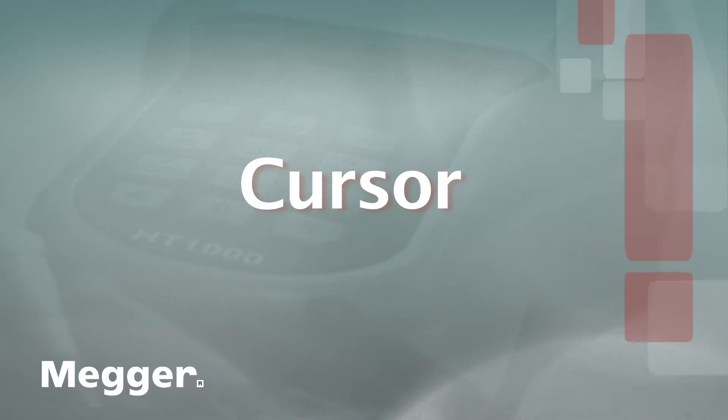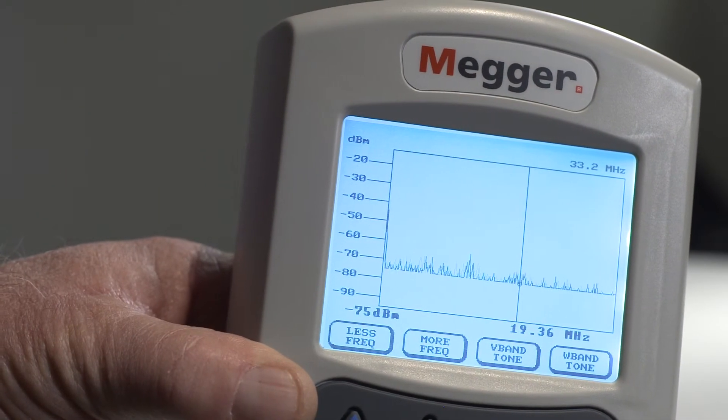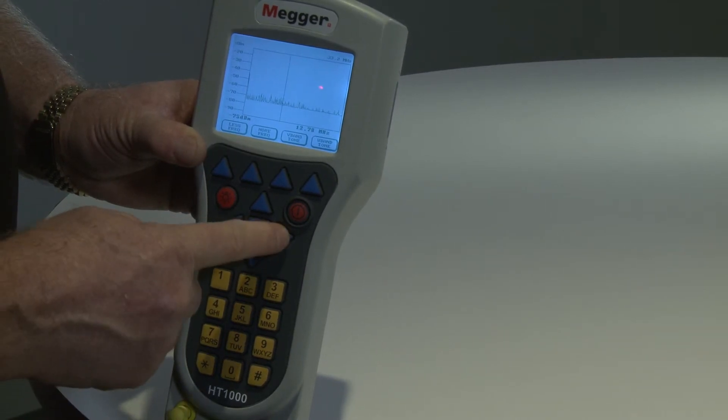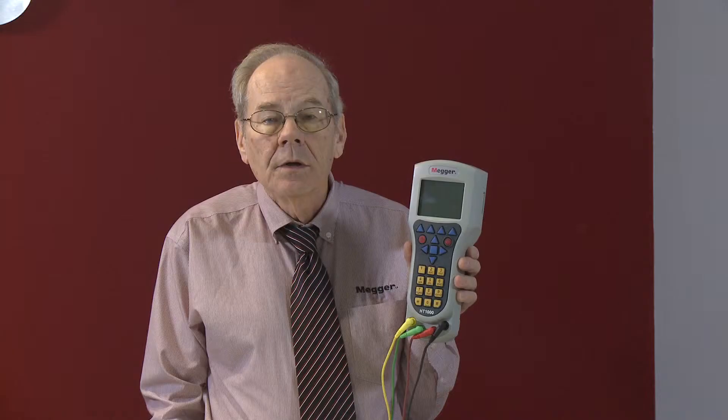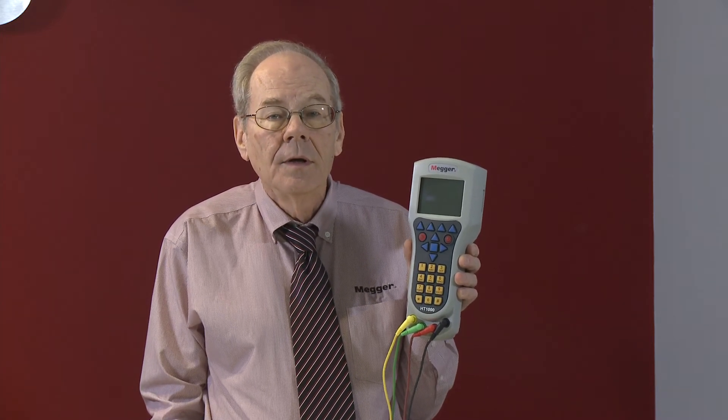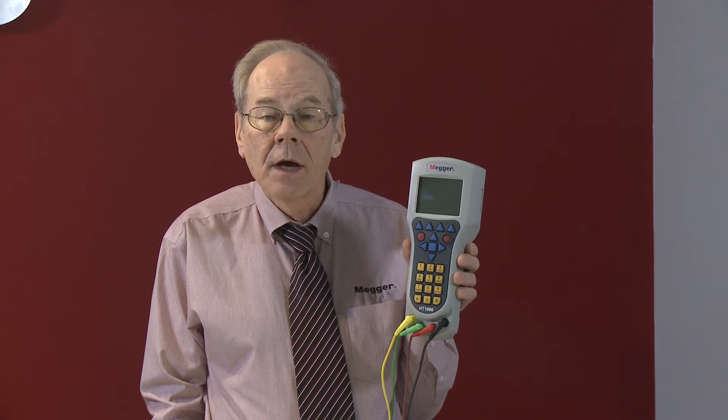Cursor. The vertical line on the spectrum display can be moved anywhere across the screen with the use of the left and right navigation keys. The cursor is used to identify specific signal amplitude, measured in dBm, and frequency.